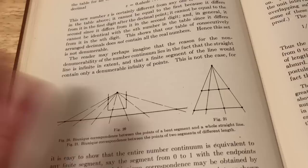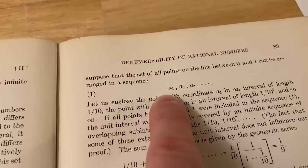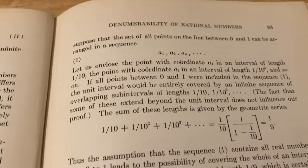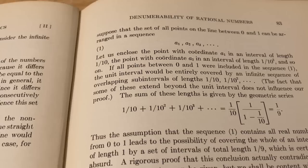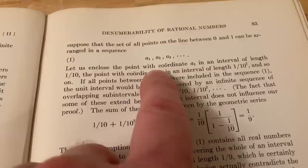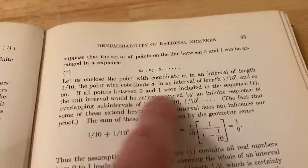Here he gives a proof by contradiction. It says, let us assume that the set of all points on the line between zero and one can be arranged in the following sequence: a1, a2, a3, etc. And what he's going to try to show here is to prove that you can't actually count all of the numbers between zero and one. In other words, the set is not denumerable. So basically, suppose it is, and you suppose you could just list them all: a1, a2, a3. And then he encloses the point with coordinate a1 in an interval of length 1 over 10, and the point with coordinate a2 in an interval of length 1 over 10 squared, and so on.